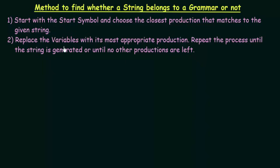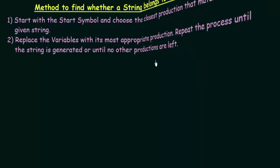We replace the variables — variables are the non-terminal symbols — with their most appropriate production that will match the given string, and then we repeat the process until the string we require is generated or until no other productions are left. So these are the steps we need to follow to find out whether a string belongs to a grammar or not.